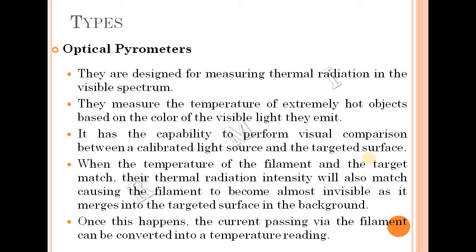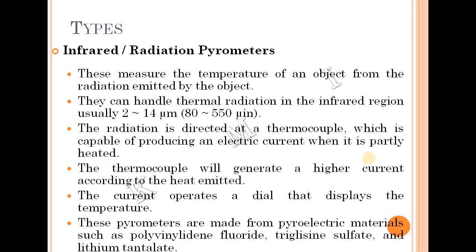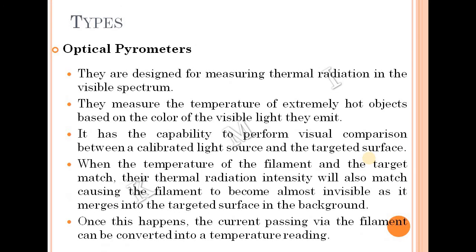There are two types of pyrometers. One is optical pyrometers, and the other is infrared or radiation pyrometers. Optical pyrometers are designed for measuring thermal radiation in the visible spectrum, and they measure the temperature of extremely hot objects based on the color of the visible light they emit.